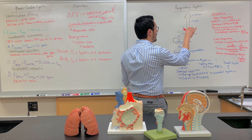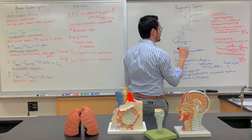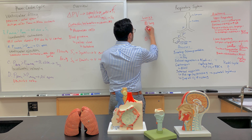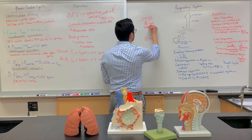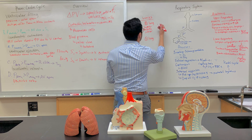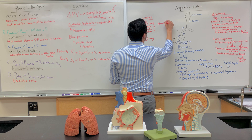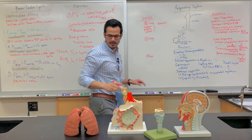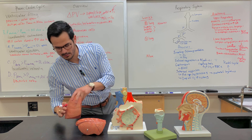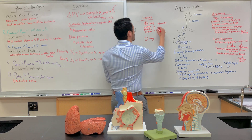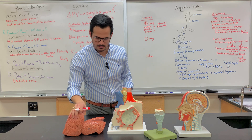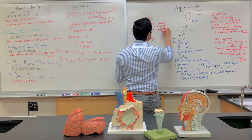Now we're going to move on to the lungs and some of their features. For the right lung, there are three lobes: the superior lobe, the middle lobe, and the inferior lobe. They are divided by structures known as fissures. Between the superior and middle lobe is the horizontal fissure, which goes in the transverse direction. The one that goes downward at an angle is called the oblique fissure.